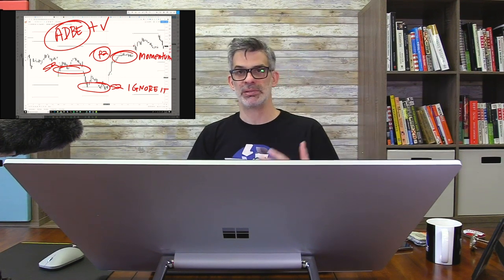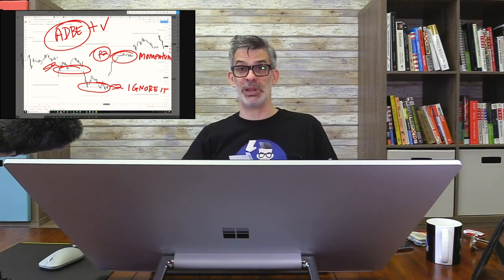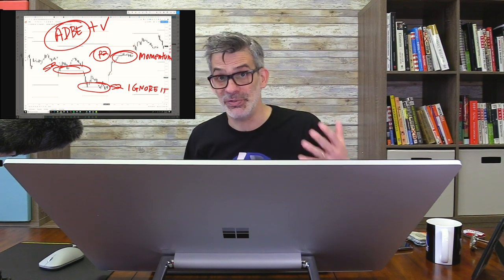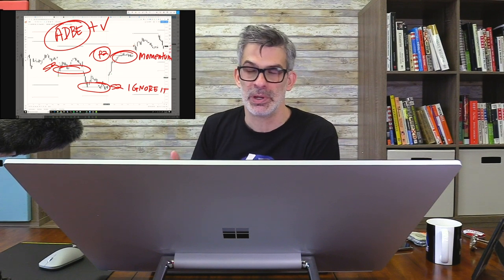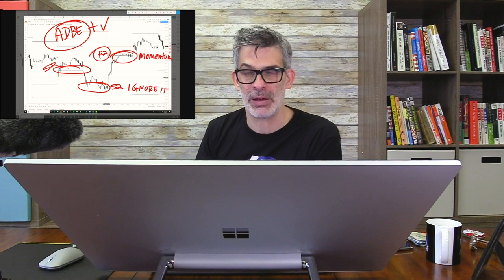Usually we talk about countertrend trades where we know we like a financial instrument and we wait for a pullback. In today's video, I want to introduce the idea that if you really like something and it's breaking out, it's not chasing after it — if you buy it on that breakout, it's waiting until the market agrees with your point of view. When we come back, I'm going to give you an entry and exit and profit target methodology that's a little bit different than last time. This time on stocks — we'll be right back.